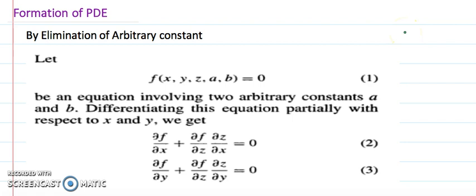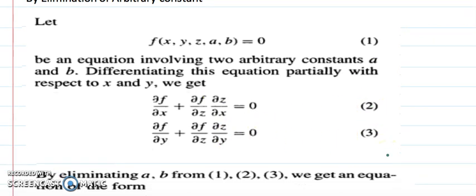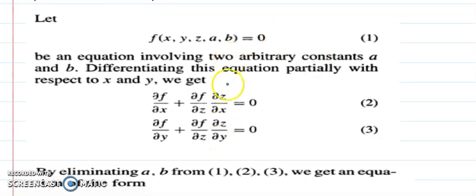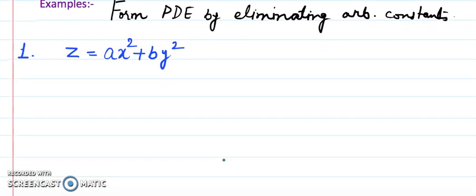Now we discuss the main part of today's lecture: how to form a partial differential equation. There are two methods. Method one is by elimination of arbitrary constants. If we have a relation between X, Y, Z with two arbitrary constants A and B equal to zero, we differentiate partially with respect to X and Y to get three expressions. We then eliminate A and B from these expressions, and the resulting relation is the partial differential equation.